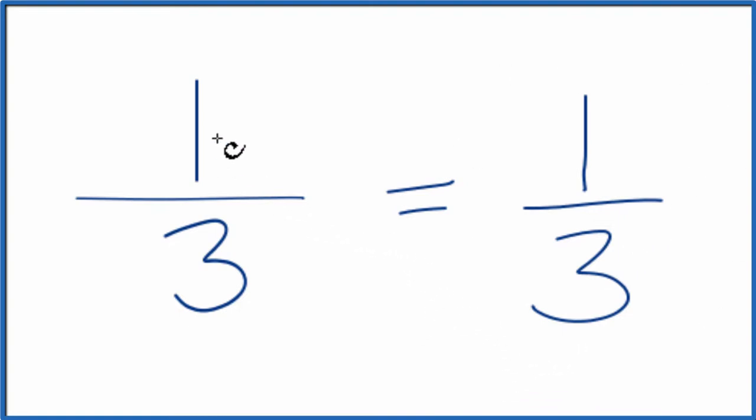What that means is that one-third is already simplified. You can't reduce this any further. It's in its lowest terms. If you do need to convert one-third to a decimal, there's a link at the end of this video.